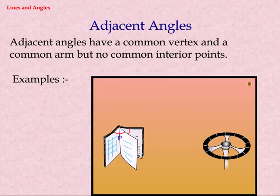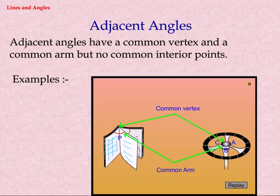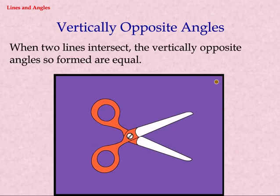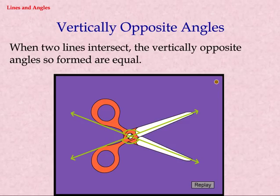Adjacent Angles. Adjacent Angles have a common vertex and a common arm but no common interior points. Examples are as shown below.